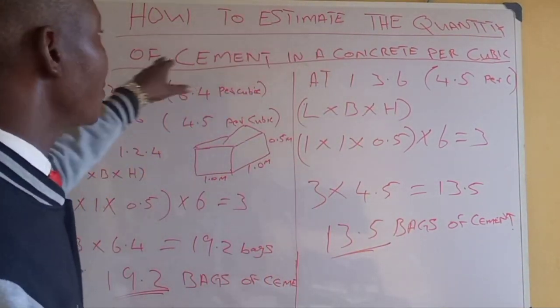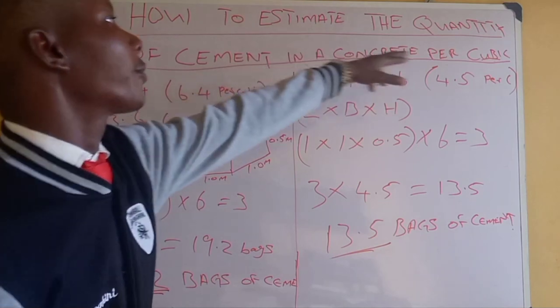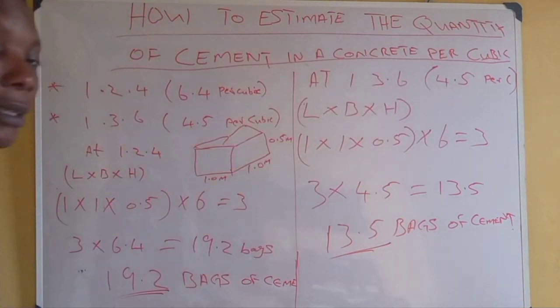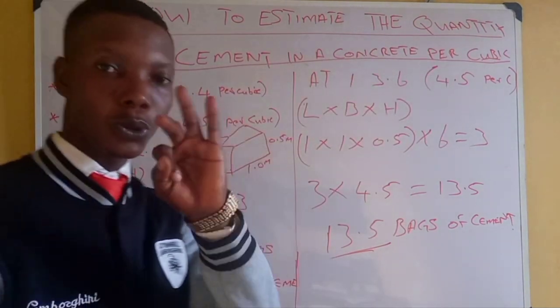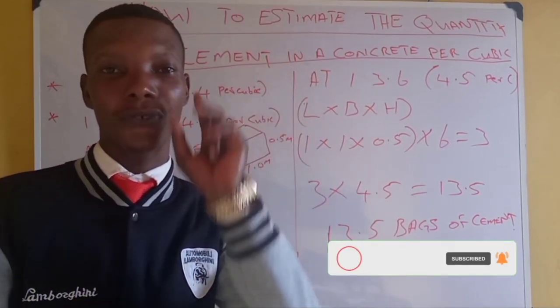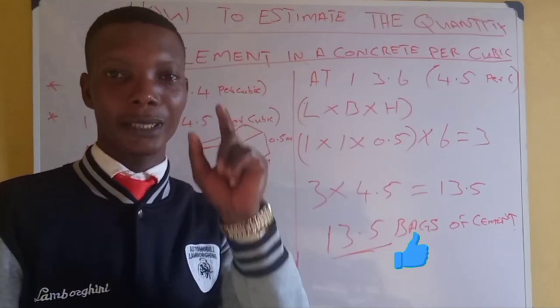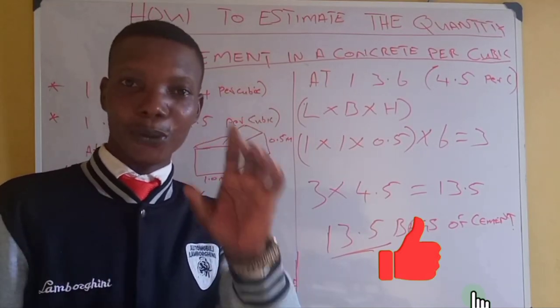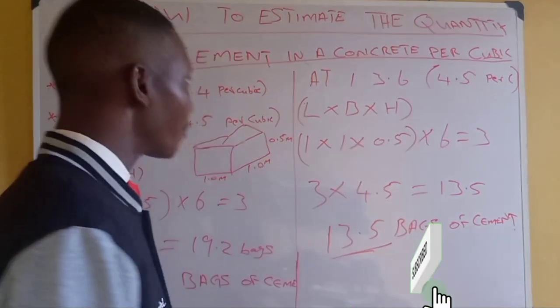How to estimate the quantity of cement in concrete per cubic meter. I want to introduce two methods to you. The first I'm going to teach you is ratio 1:2:4 with 6.4 bags per cubic meter. Please pay proper attention.